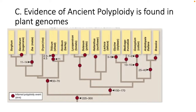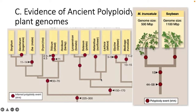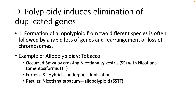Evidence of ancient polyploidy is found in plant genomes across the board, as seen in this cladogram. Polyploidy has occurred numerous times in the evolution of flowering plants. Increase in genome size through polyploidization has definitely downsized in some lineages. Polyploidy also induces elimination of duplicated genes — after an allopolyploid from two different species forms, it is followed by rapid loss of genes and some rearrangement.